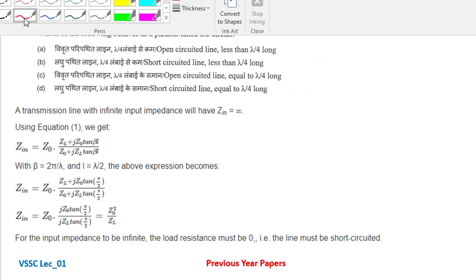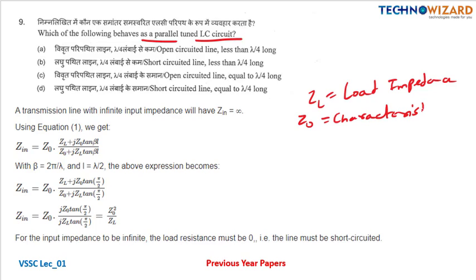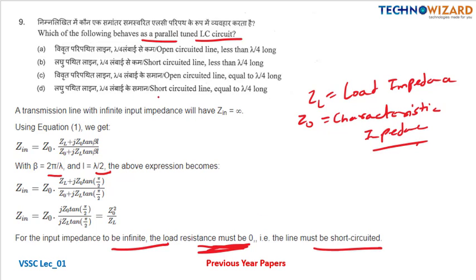Question number nine: which behaves as a parallel tuned LC circuit? For a parallel tuned LC circuit, the input impedance equation is Z input equals Z naught times (ZL plus j Z naught tan(beta l)) upon (Z naught plus j ZL tan(beta l)). Beta equals 2 pi over lambda and l equals lambda over 2. Putting these values, you get Z naught squared upon ZL. For input impedance to be infinite, the load resistance must be zero — the line must be short circuited. Option D is the correct answer.